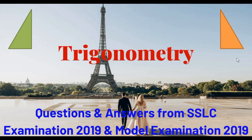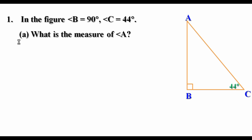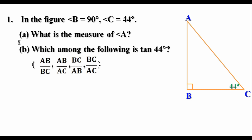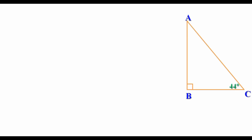Today let us discuss questions from previous question papers. We are going to discuss questions from the SSLC examination 2019 and model examination 2019. First question: in the figure, angle B equal to 90 degree, angle C equal to 44 degree. What is the measure of angle A? Which among the following is tan44? AB by BC, AB by AC, BC by AB, BC by AC. Prove that tan44 into tan46 equal to 1. It is a question from SSLC examination 2019 and the score is 3.